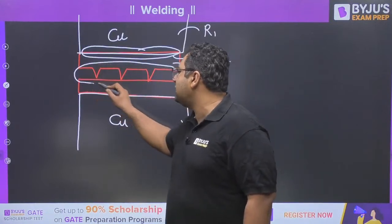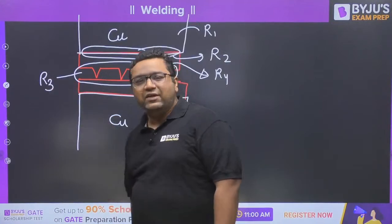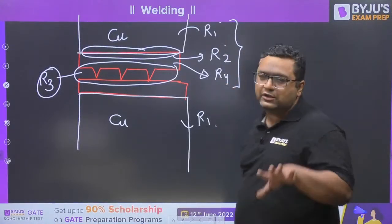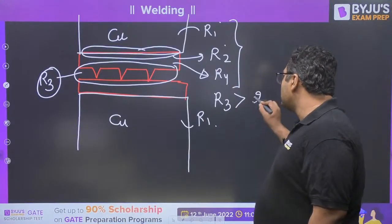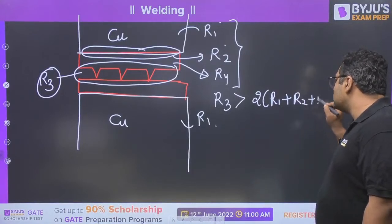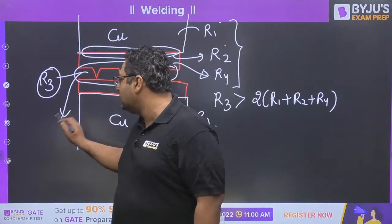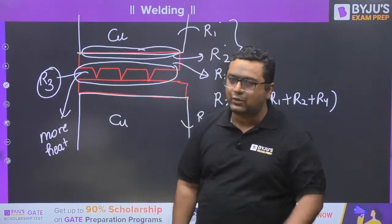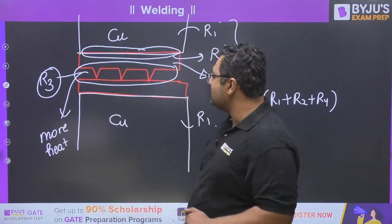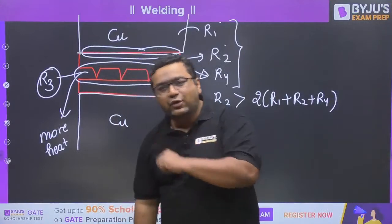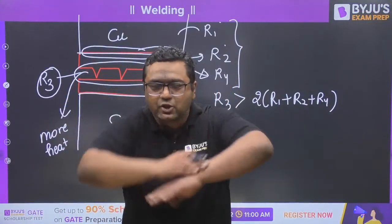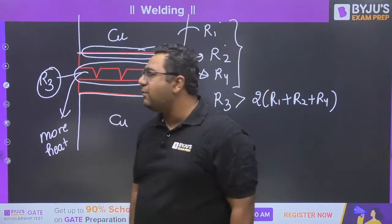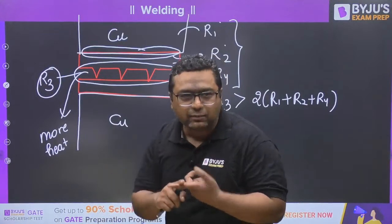R3 at the plate interface is much greater than the sum of R1, R2, and R4. Because of this high resistance at the interface, more heat is produced, resulting in the welding process. Welding takes place through pressure plus heat combined. Unlike arc welding which uses only heat, resistance welding uses both heat and pressure.